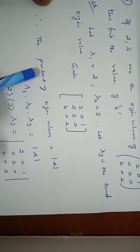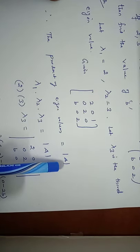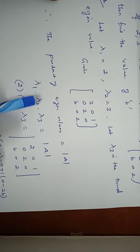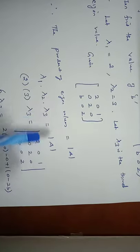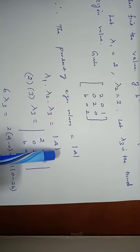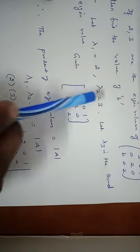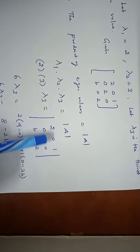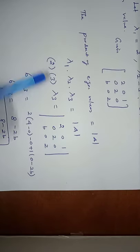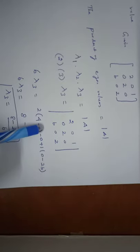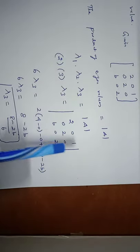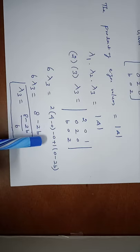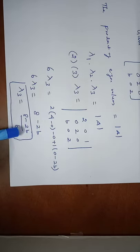Using the property: product of eigenvalues equals the determinant of A. So Lambda 1 · Lambda 2 · Lambda 3 = det(A). With Lambda 1 = 2 and Lambda 2 = 3: 6·Lambda 3 = det([2,0,1; 0,2,0; B,0,2]) = 2·(4 - 0) + 0 + 1·(0 - 2B) = 8 - 2B. Therefore Lambda 3 = (8 - 2B) / 6.